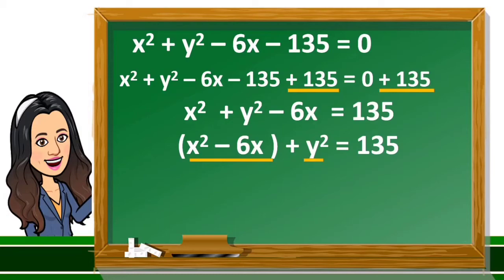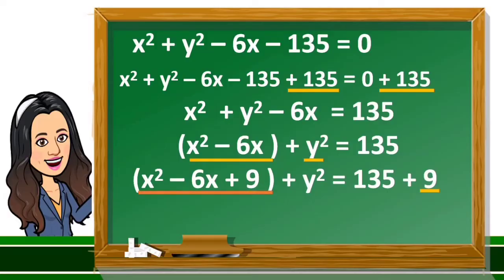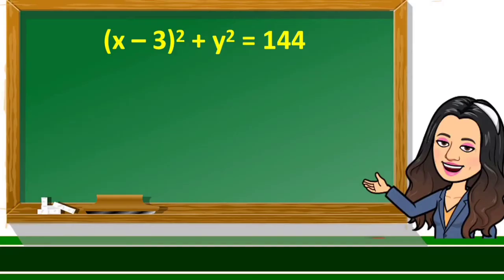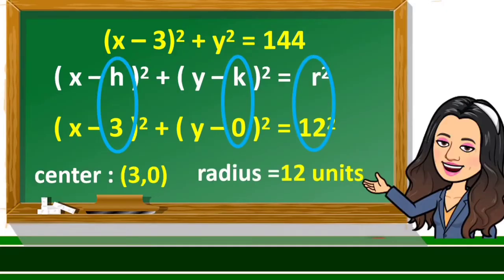On the left side, group terms involving x and terms involving y. Complete the square on x squared minus 6x to get x squared minus 6x plus 9. Since we added 9 on the left side, add 9 on the right side as well. Factor x squared minus 6x plus 9 to get the square of the quantity x minus 3, and simplify 135 plus 9 to get 144. The center is at (3, 0) and the radius is 12 units.